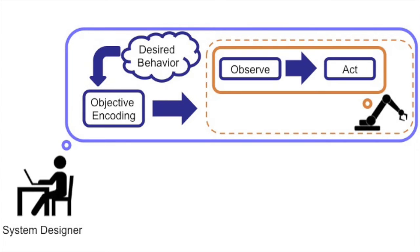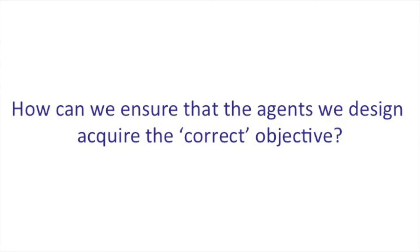The core of the value alignment problem is that the system designer is often imperfect. This could be because she lacks pertinent information, or simply because it might be possible to make a mistake. The core question we consider in our work is how we can ensure that the agents we design acquire the objective that we truly intended.